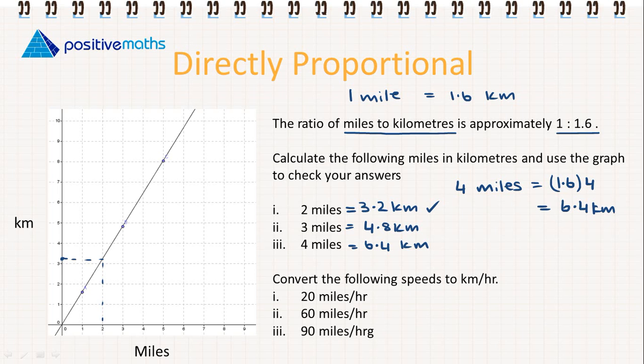Our next one, 3 miles. Again we go up along the dotted line until we meet the line, we go across and we see that yes it is approximately 4.8 kilometers on our graph. And 4 miles, again we do the same, we go up, we go across and we see that yes it is 6.4 kilometers. So we have converted miles to kilometers and we see from the graph that our answers are correct.